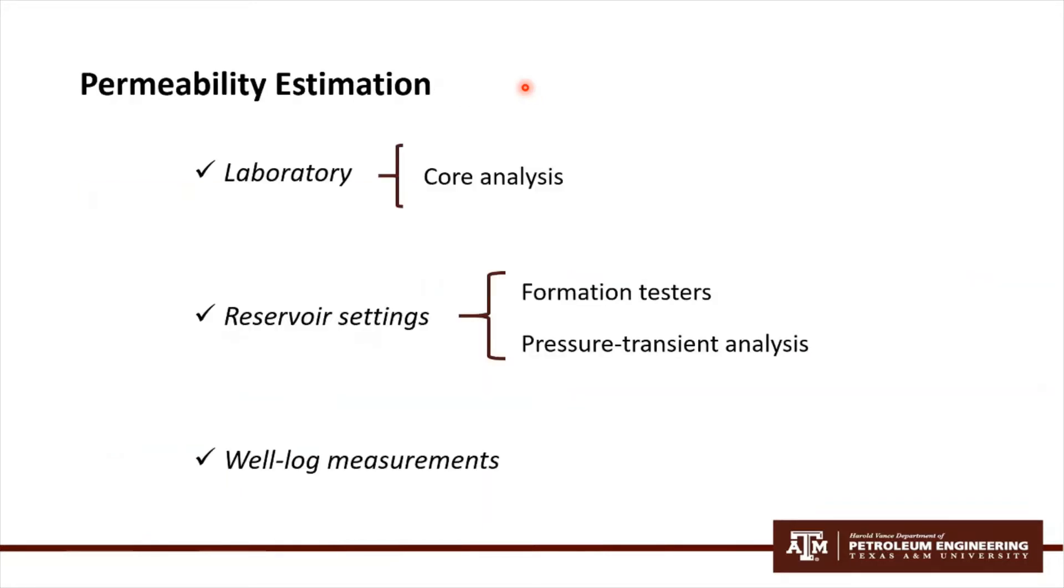Permeability can be estimated through laboratory, reservoir settings, and well-log measurements. For laboratory, there are core analysis. For reservoir settings, formation testers and pressure transient analysis. In particular, pressure transient analysis provides only a single value of permeability, while the core analysis and the formation testers strongly rely on the pressure-rate relationship for permeability estimation.